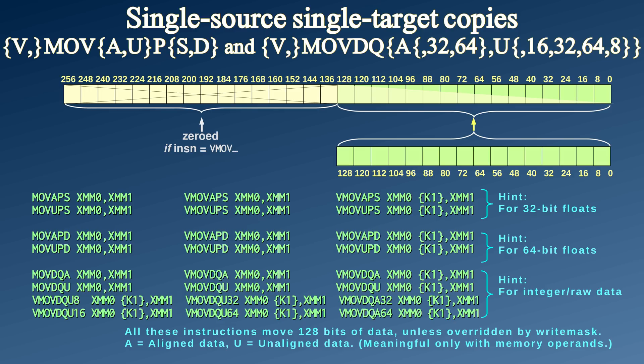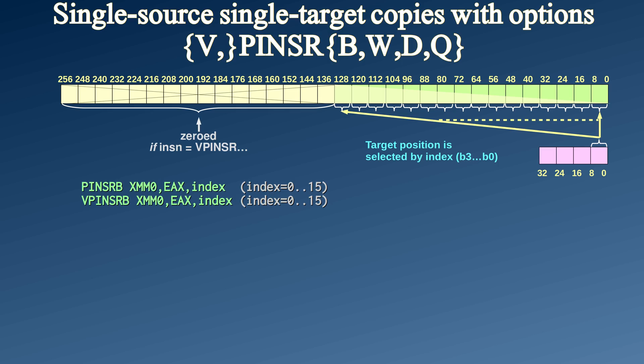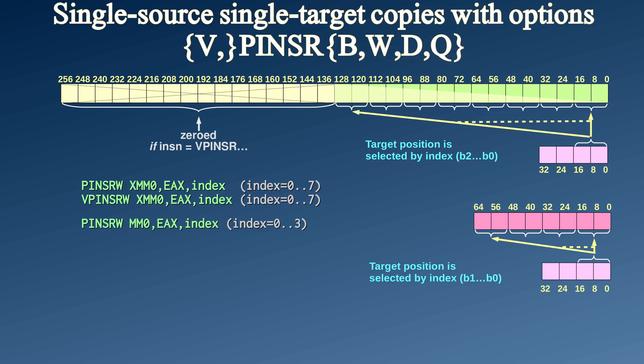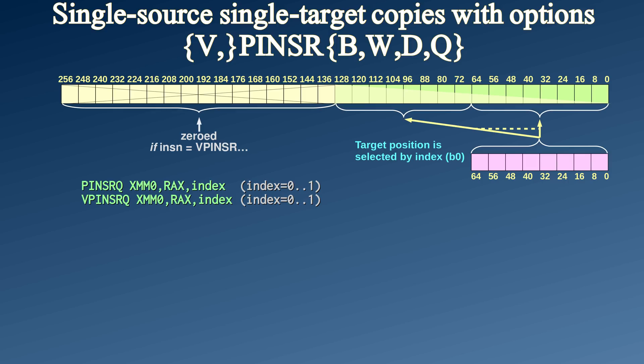Of course, these instructions can also be used with 256-bit registers. The move doesn't always have to address the lowest part of the register. The PINSRB instruction inserts 8 bits from the source register into any position in the target register, chosen by an index number. Similarly, there is PINSRW for 16 bits, which can also be used with MMX registers, PINSRD for 32-bit moves, and PINSRQ for 64-bit moves.